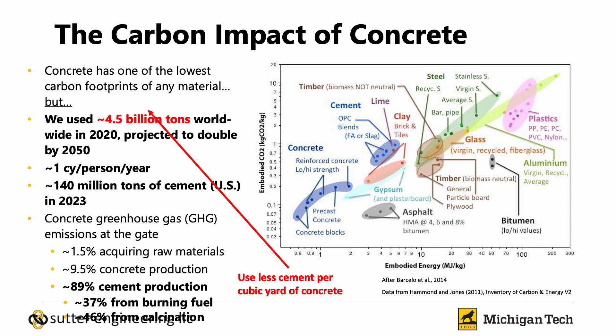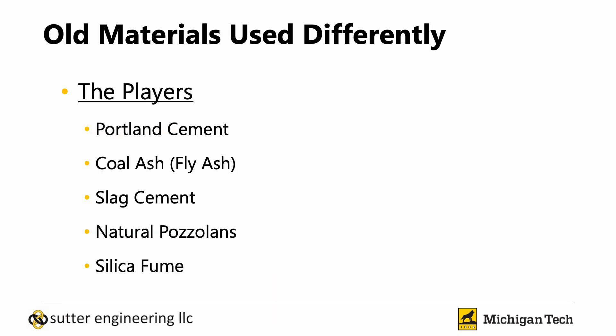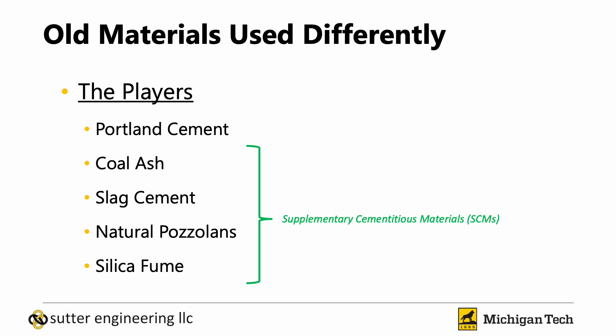The existing materials are familiar to everybody: Portland cement, coal ash (what we used to call fly ash, now potentially blended with bottom ash or other materials from harvested sources), slag cement from blast furnace slags, natural pozzolans, and silica fume. These latter materials are all referred to as supplementary cementitious materials, or SCMs.